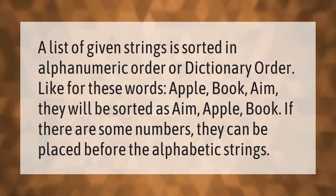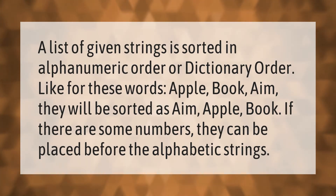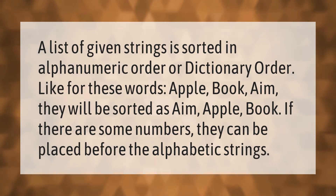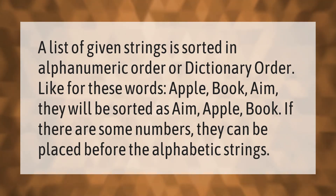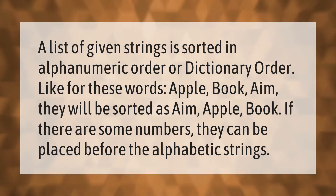A list of given strings is sorted in alphanumeric order or dictionary order. For example, the words apple, book, and aim will be sorted as aim, apple, book. If there are some numbers, they can be placed before the alphabetic strings.